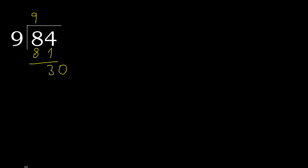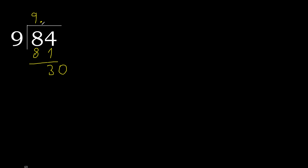Always complete with 0 here, with a decimal point. Write 0 after the decimal point. Now we have 30. Find: 9 multiplied by which number? 9 multiplied by 4 is greater, so try 9 multiplied by 3 — 27 is not greater. Subtract: 30 minus 27 equals 3. Complete.